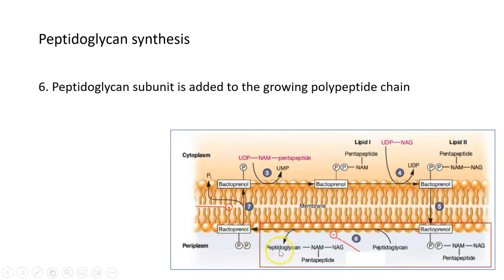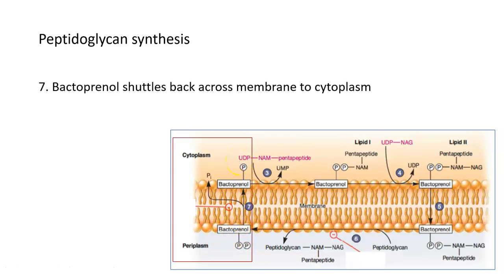But what you notice is that, yes, that's great. We took a subunit. We added it to the cell wall. That's beautiful. But we still have bactoprenol out here on the outside. And if we want it to work as a shuttle, now it's stuck on the outside, which means it's not in here bringing new pieces out. So we need a way to get bactoprenol to move from the outside back to the inside or the cytoplasm.